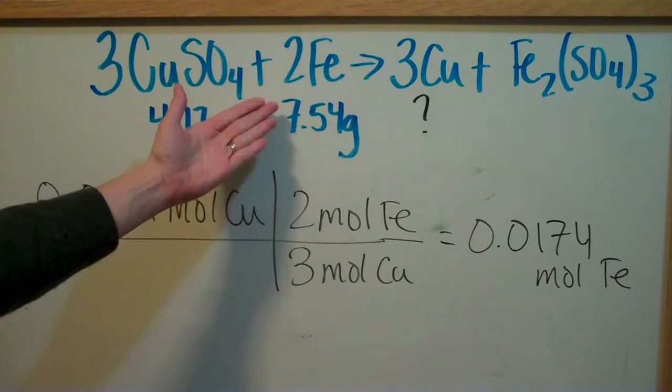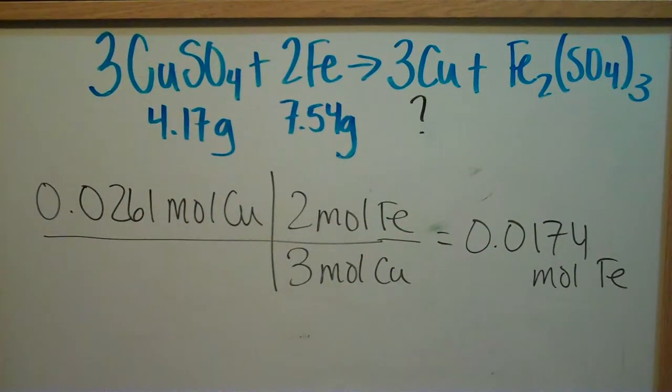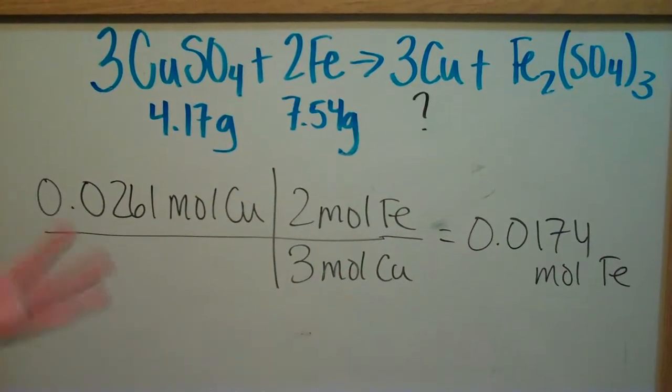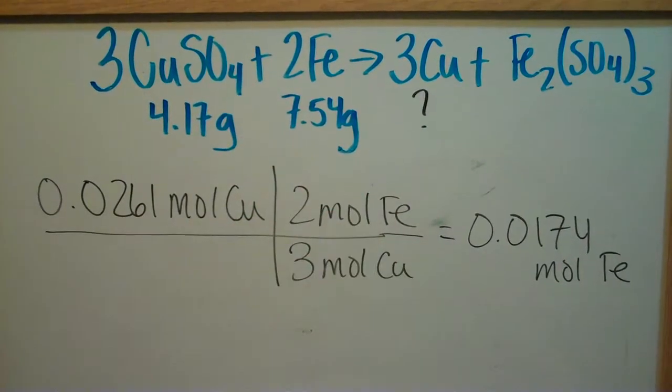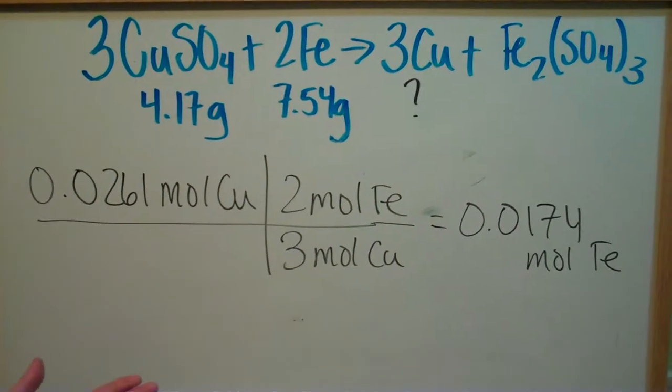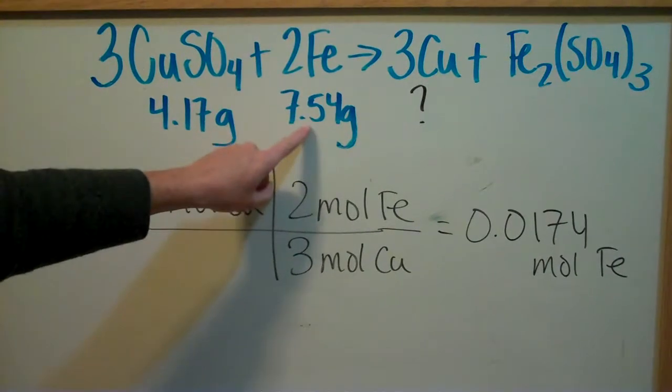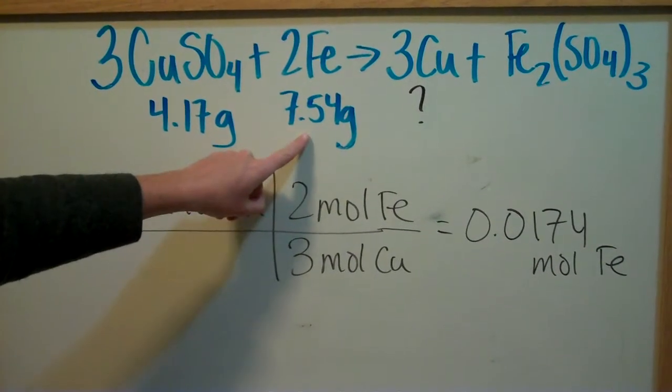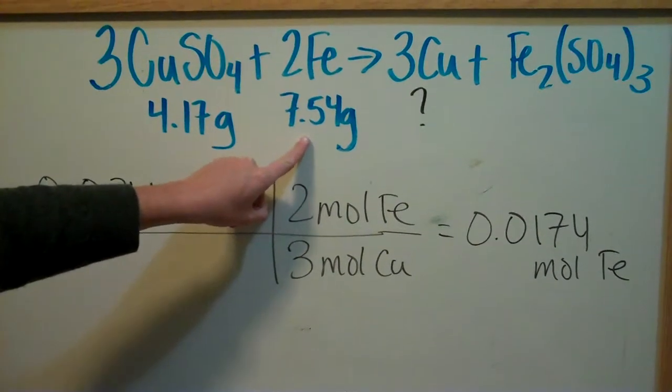Now, if you were given moles initially, you'd do a simple subtraction. But we can't really do that. We can determine how many moles this is and then subtract. But likely, what the question is going to ask for is, how many more grams do we have than we need? We know we don't need all 7.54 grams.